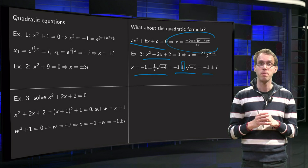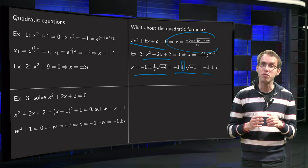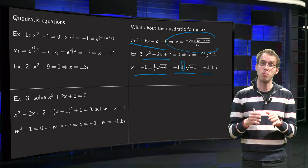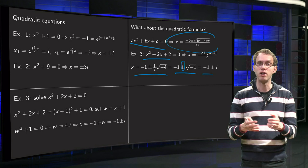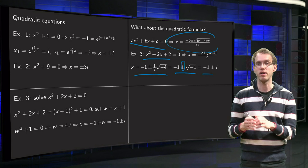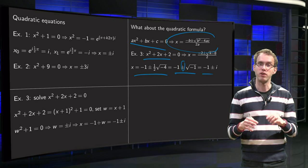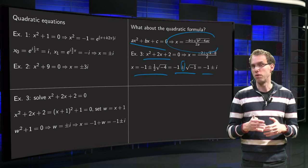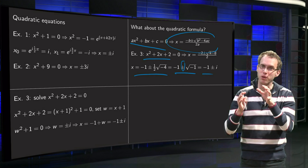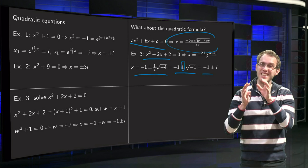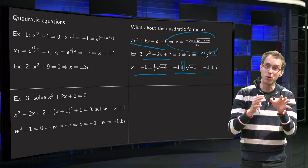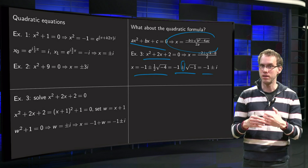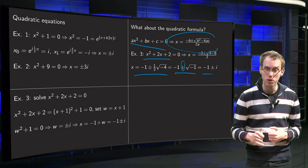So for a quadratic equation with a linear term, you can either complete the square or use the quadratic formula, replacing the square root of minus 1 by i. Of course they give the same result, because the quadratic formula is derived from completing the square.